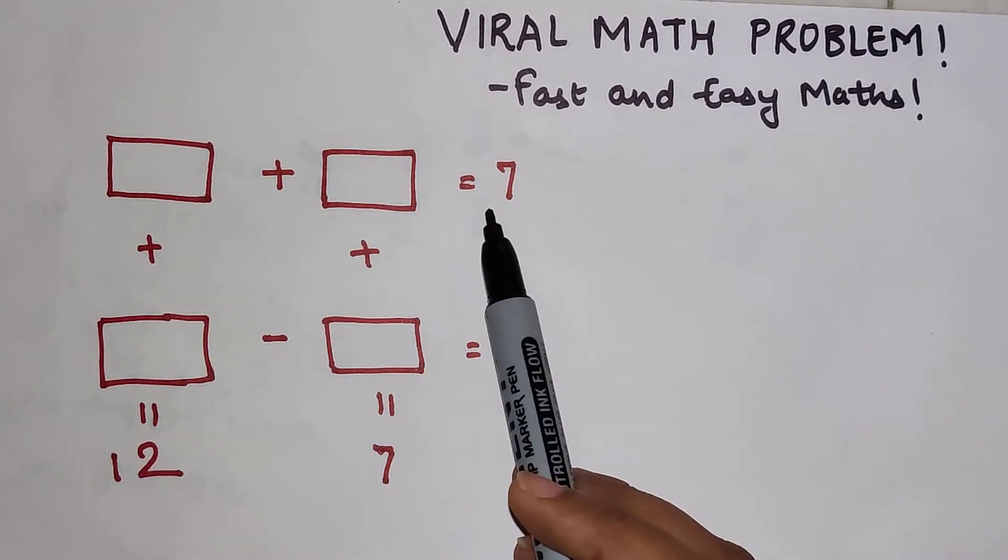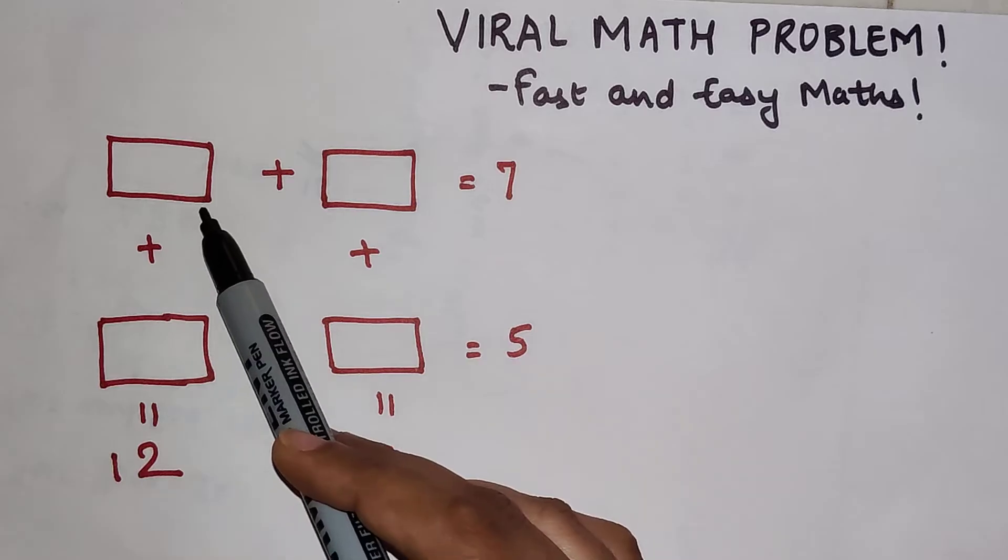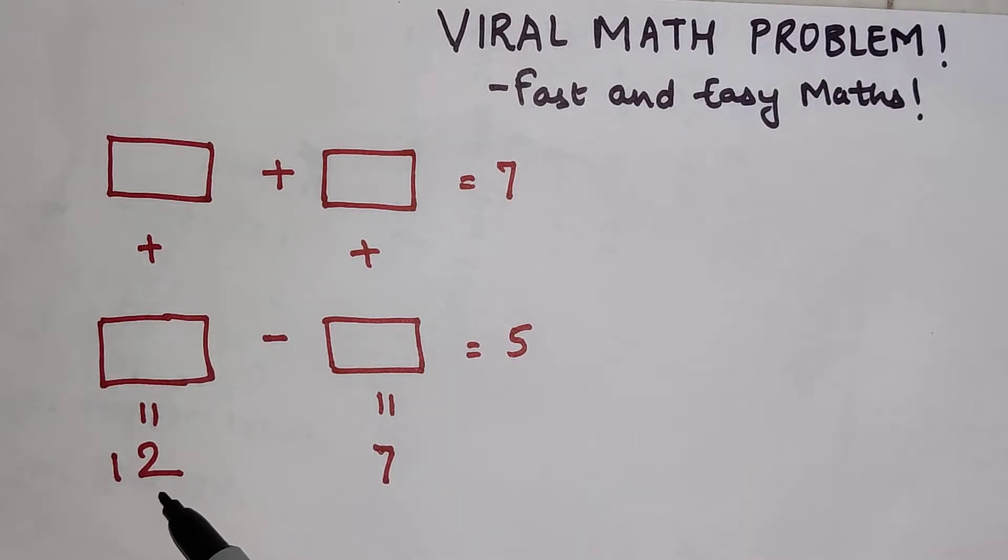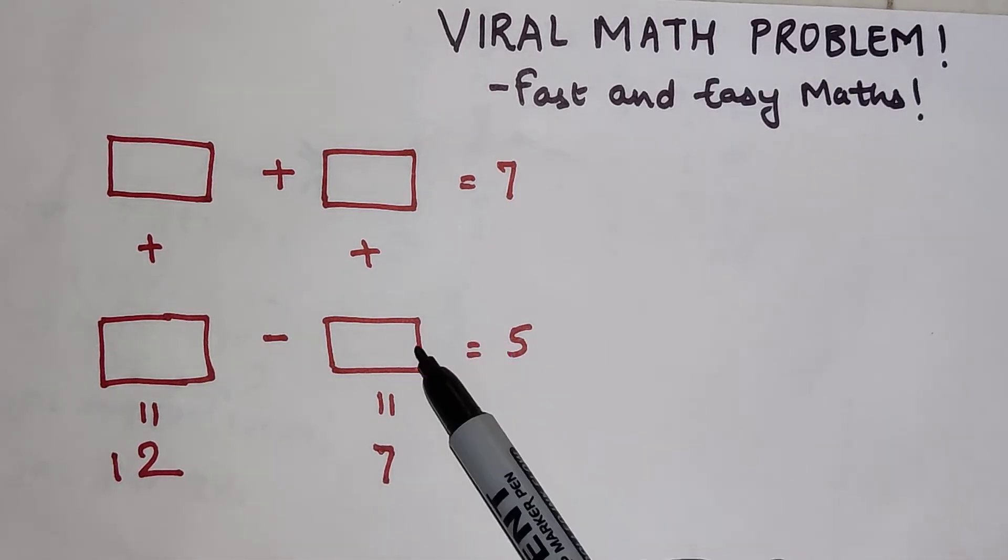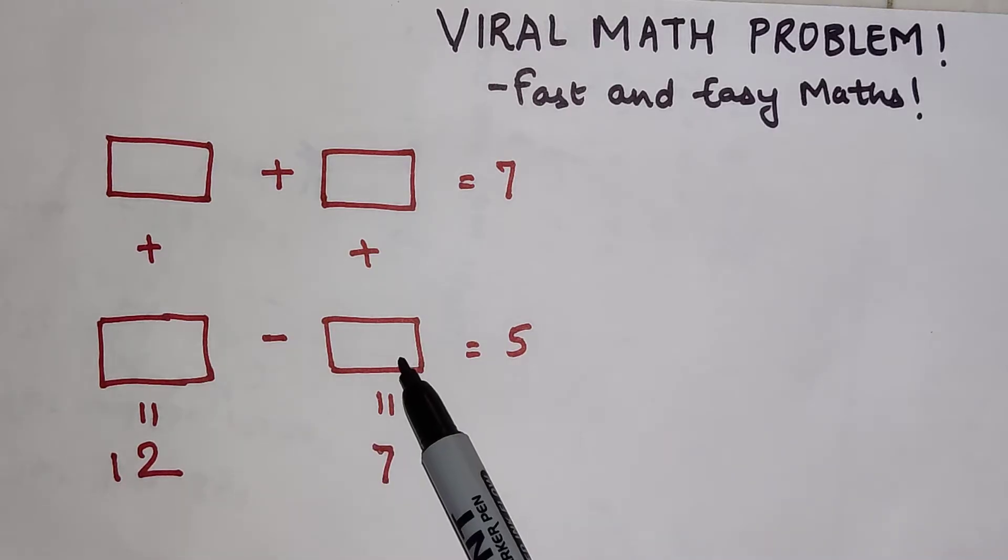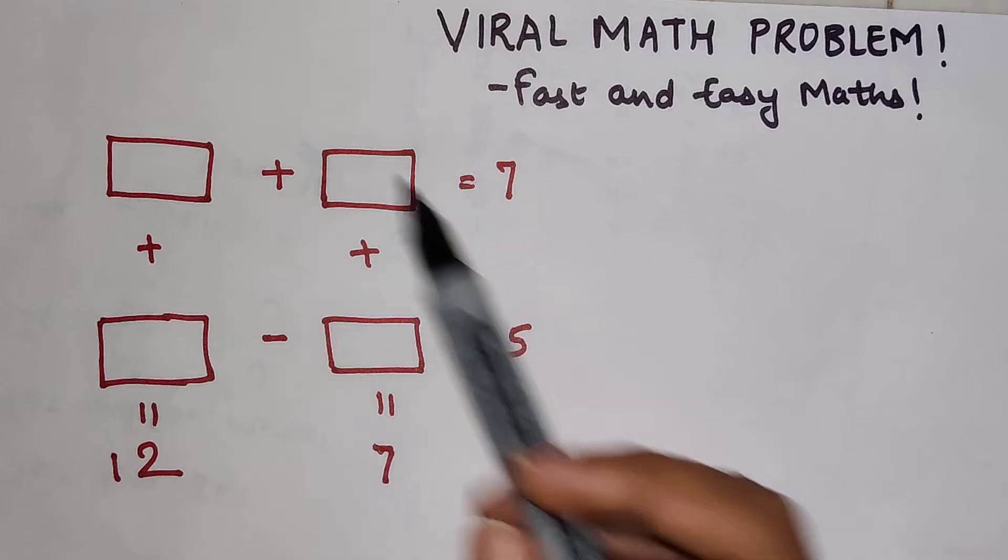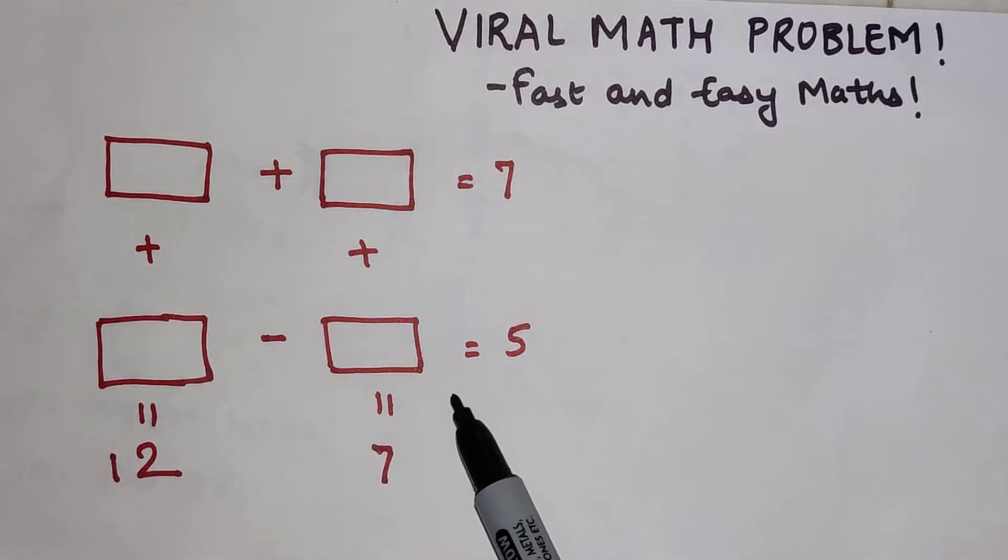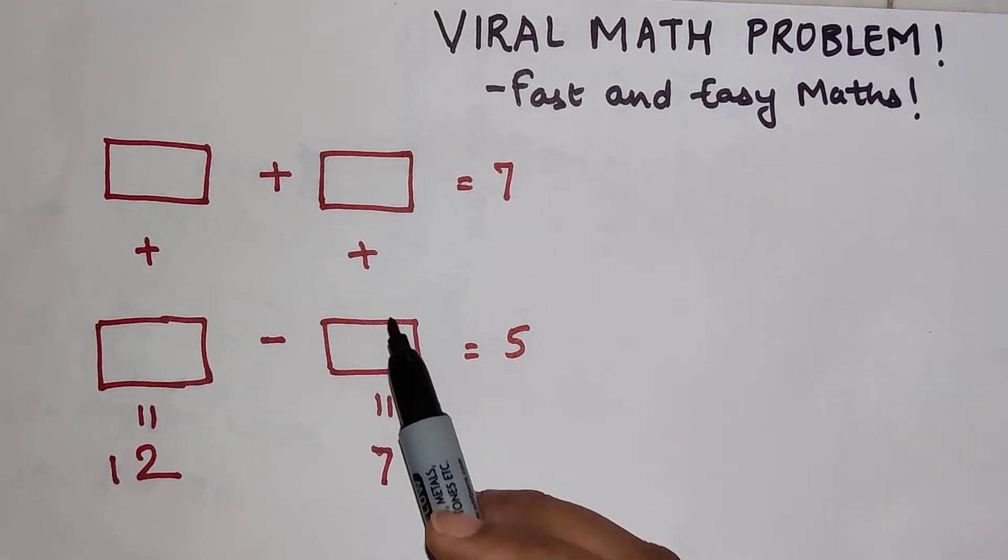The question goes: if box plus box equals 7, and this box plus this box gives you 12, and this box plus this box also gives you 7, and another box minus this box gets you 5. What you have to do is find all the values of the four boxes.